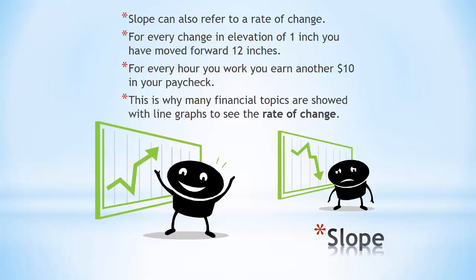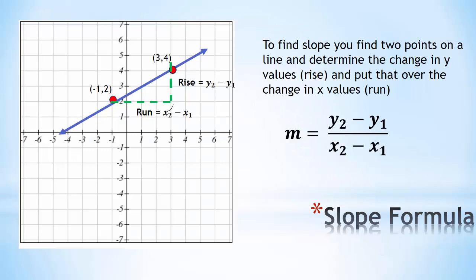To find the slope, you find two points on a line and determine the change in the y values, which we call the rise, and put that over the change in x values, which we call the run. The slope formula here you can see is m, which we stand for slope, is y2 minus y1 over x2 minus x1.